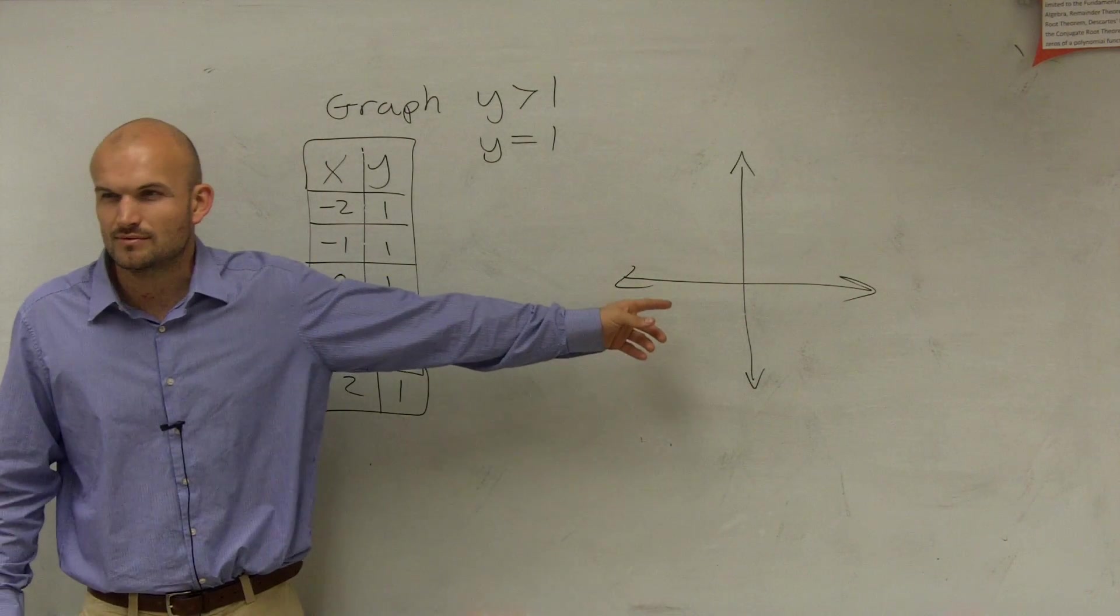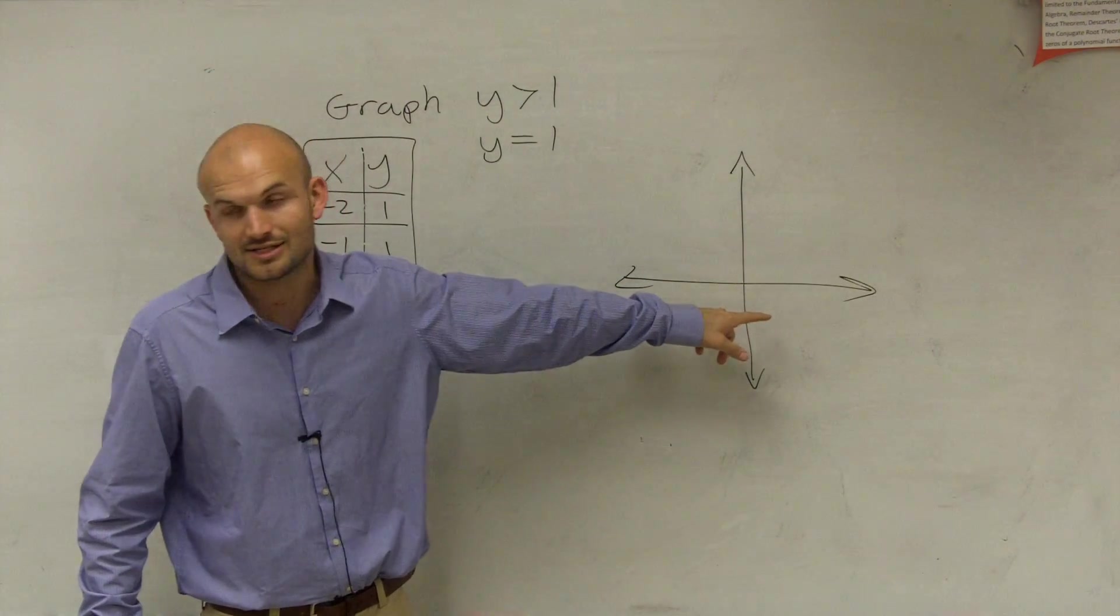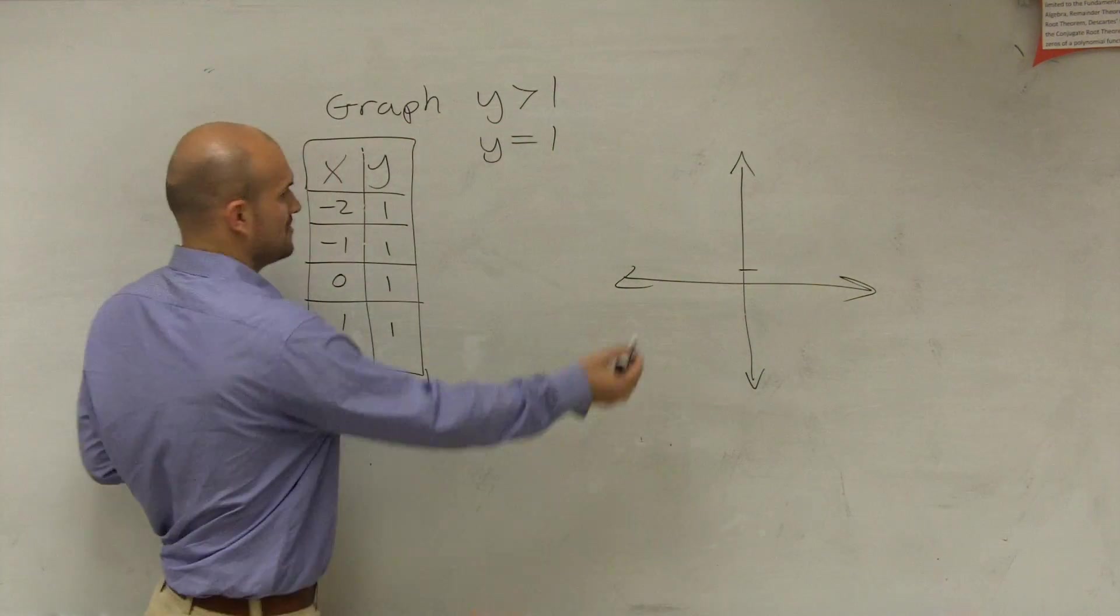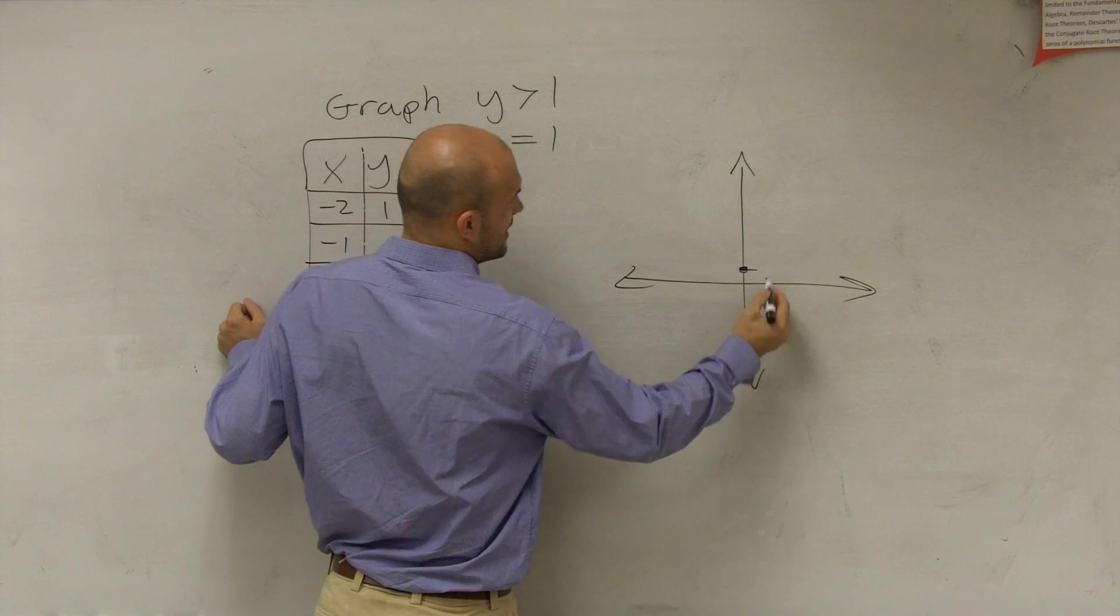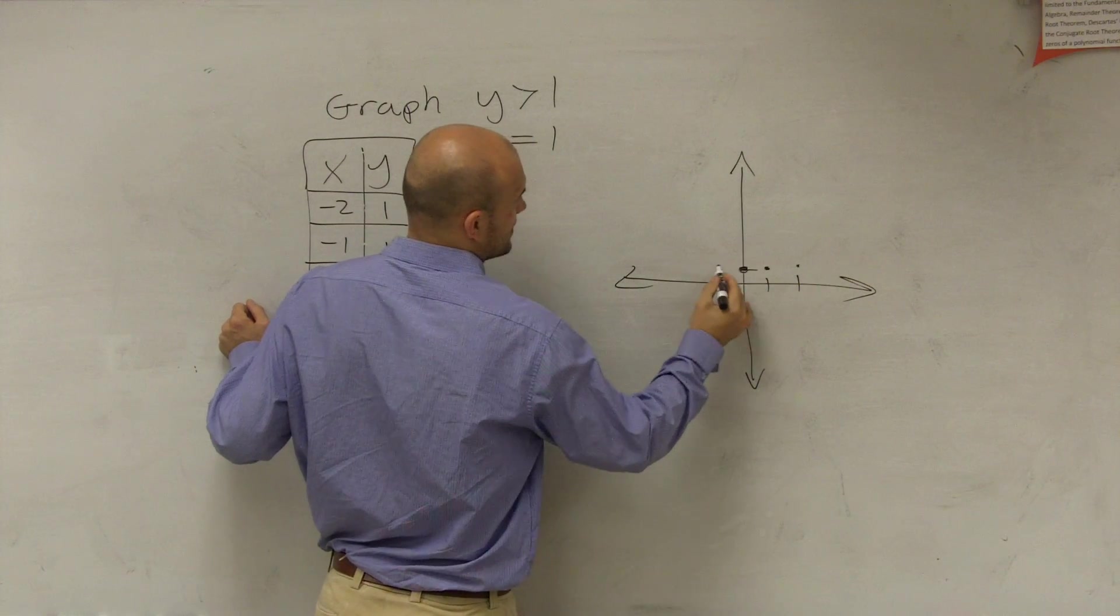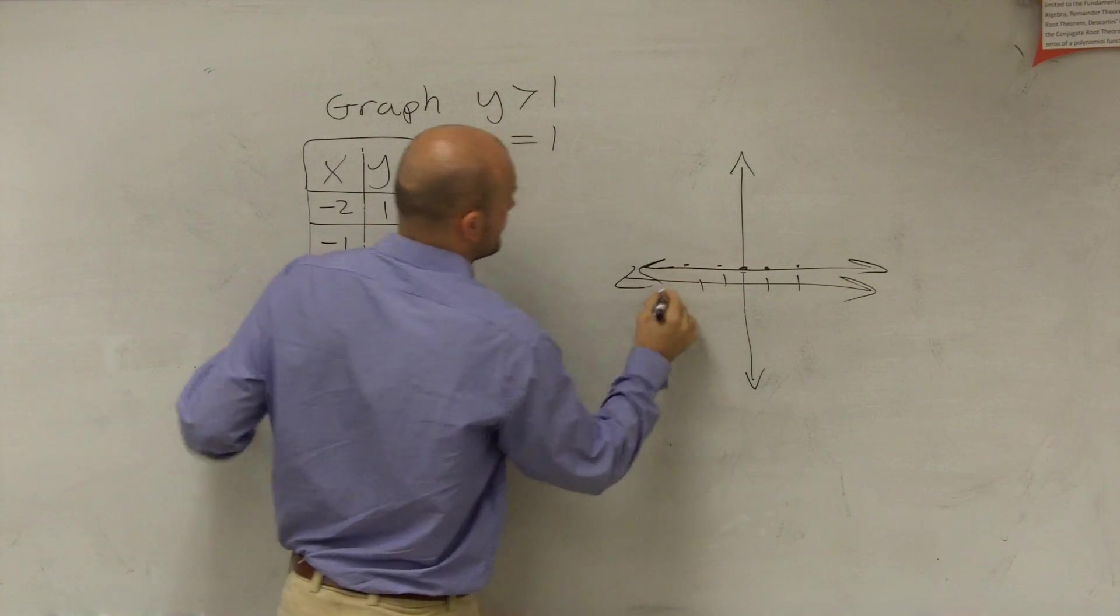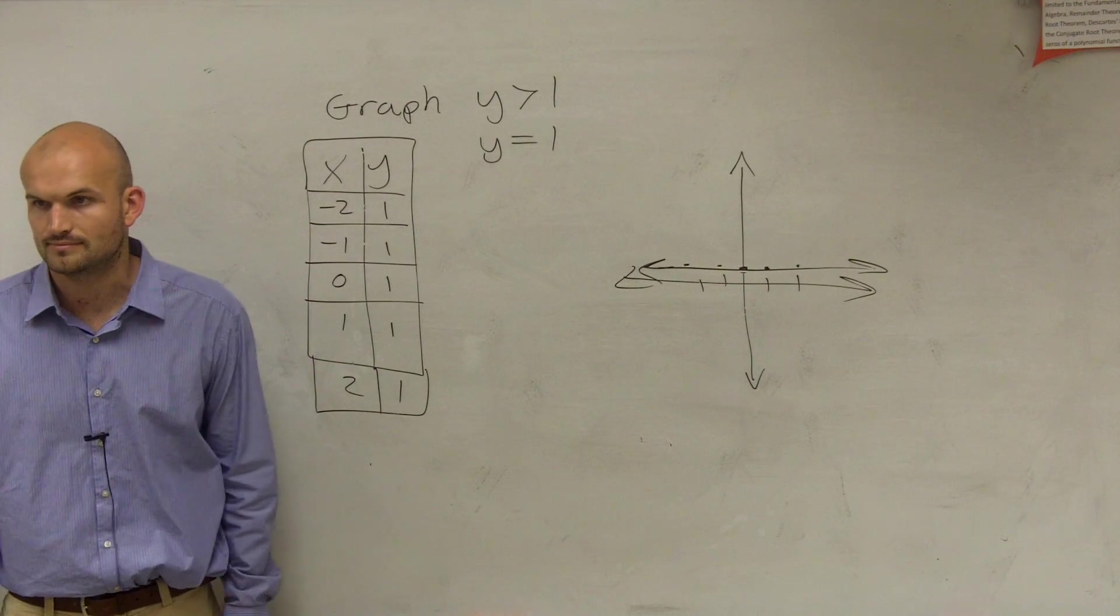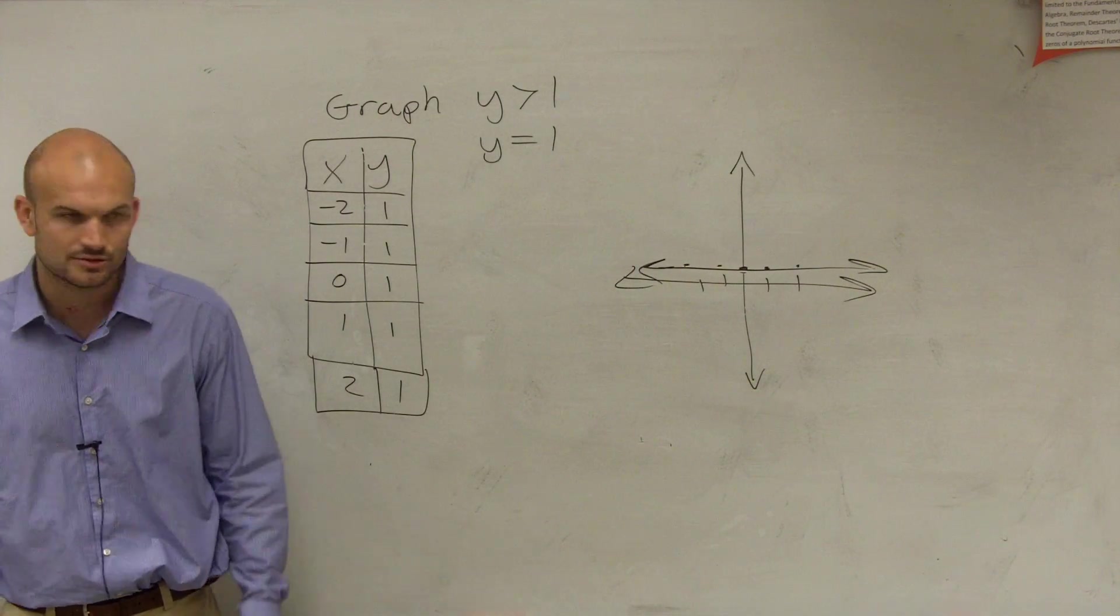And then that comes to the same point. Can y ever equal 0? No. So therefore, am I ever going to have an x-axis, x-intercept? No, I'm not. So anyways, just like Cedric said, I go up to 1 because that 0 comma 1 is a point. And then I notice is I have all these points here. So my graph looks something like that. All right? So that's how you graph y equals 1.